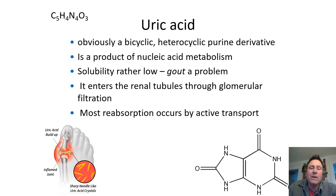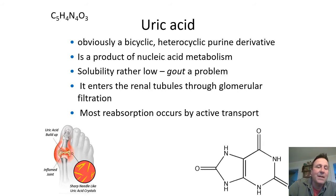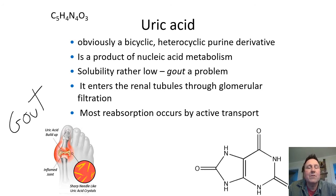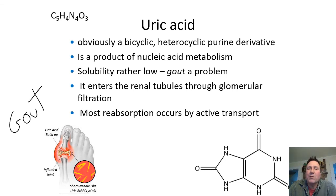When uric acid builds up, it can cause pain in your joints — particularly almost always your big toe joint is where you feel it first. It's gout. Most often in men, there's a genetic component. You fix your diet — you can't eat lobster or seafood and some other things that have a lot of uric acid. These crystals will precipitate, especially in the joints, and you'll have pain with gout.